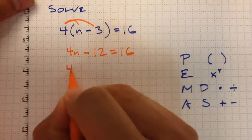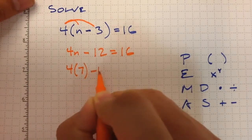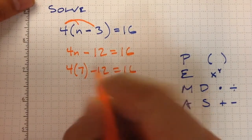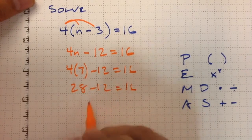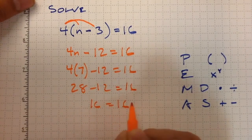And if we go back to the original problem and check it out, 4 times 7 minus 12 equals 16. 28 minus 12 equals 16, 16 equals 16, and it checks out.